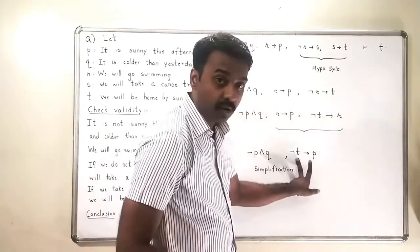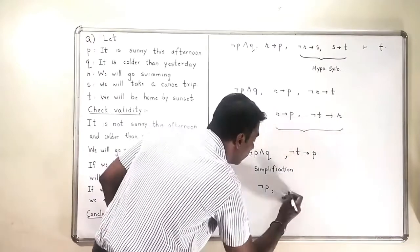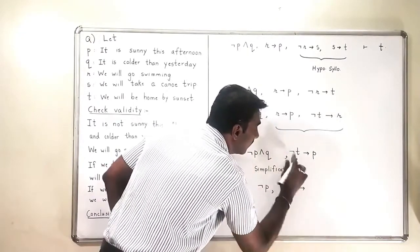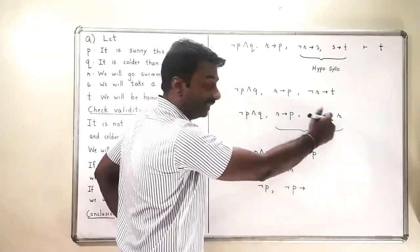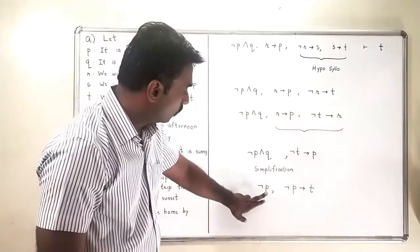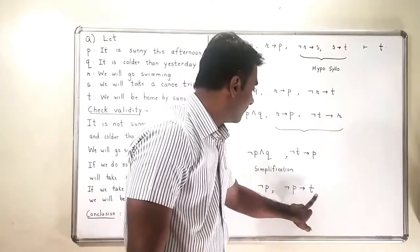The second statement, I can write the contrapositive of that. The contrapositive of this particular statement will be negation P implies negation of negation T, which will be T. So I have reduced to negation P and negation P implies T.